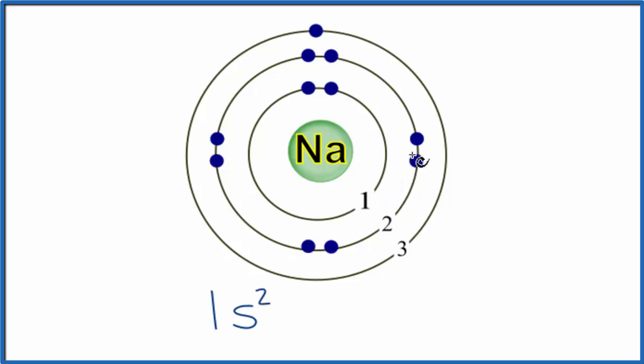Then the second energy level, we have 2, 4, 6, 8. And they're broken into a 2s2 and a 2p6. So we have a total of 8 in that second energy level.